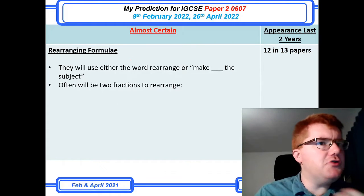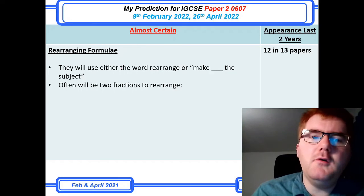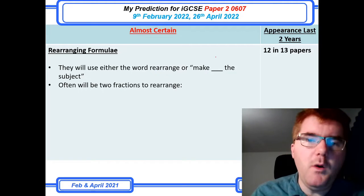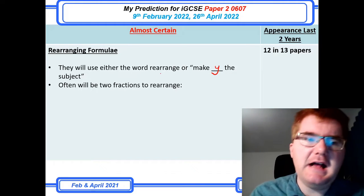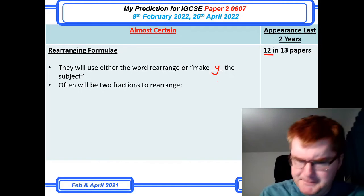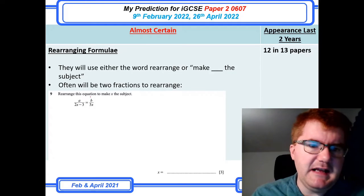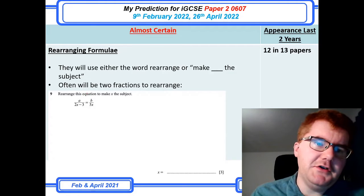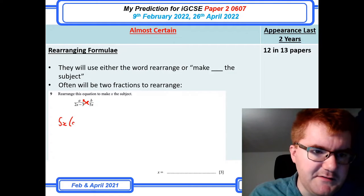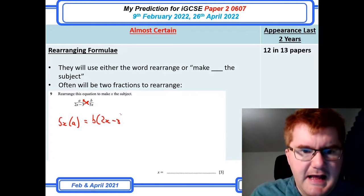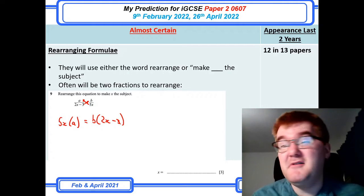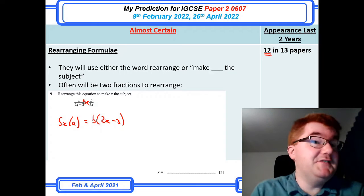Rearranging formulae — again a lot of algebra skills appear on Paper 2. The trigger words are 'rearrange' or 'make y the subject.' At higher levels, there'll often be two fractions to rearrange. A typical question: rearrange to make x the subject, where you start by cross-multiplying, expand, bring the x terms to one side, then factorize. At 12 out of 13 papers, this really does fall in the almost certain category.